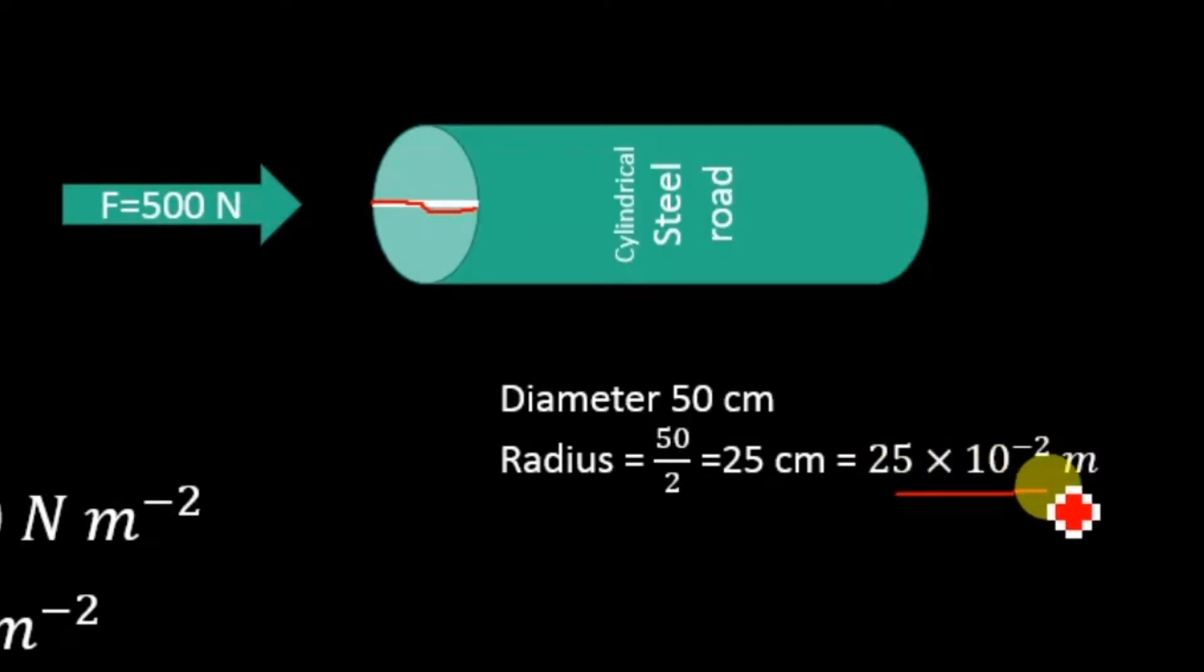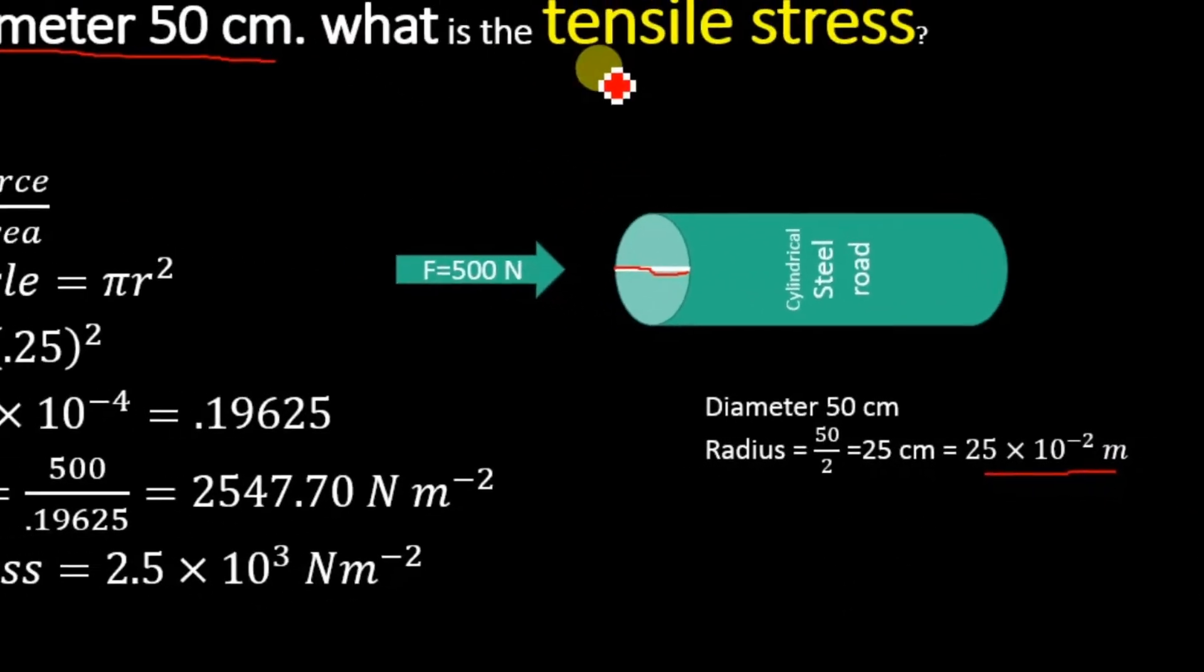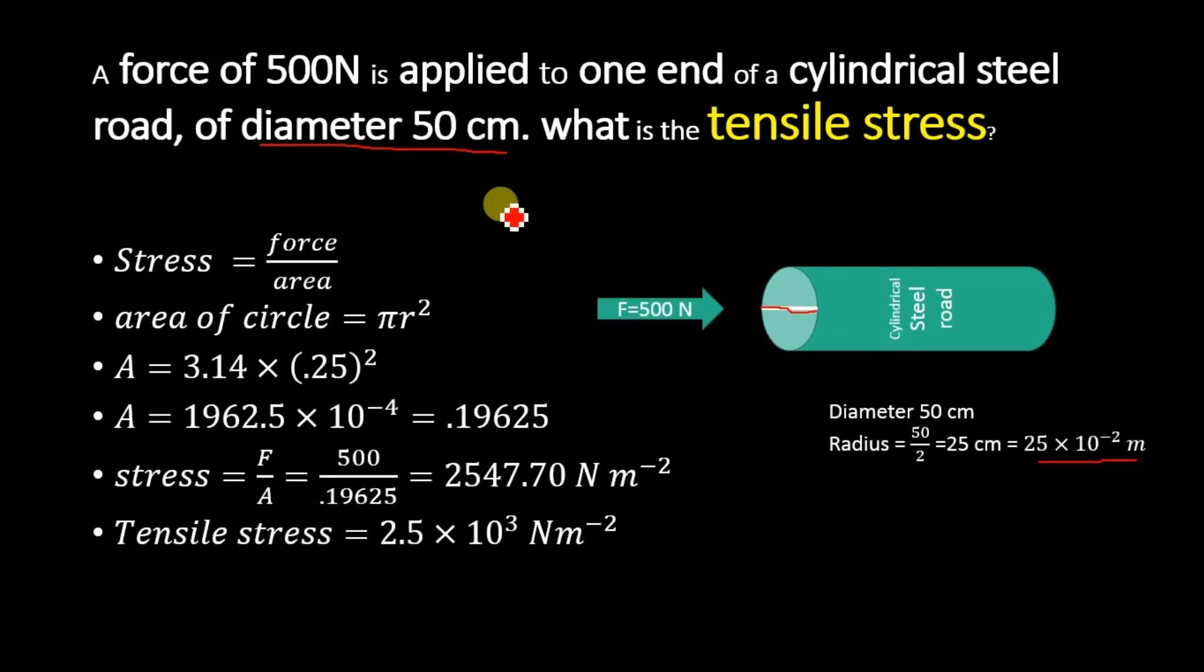So what is the tensile stress? We are going to determine the value of stress. We know that stress is equal to force divided by area. Now we know the value of force which is 500, and we will determine the area of this circular area where the force is applying. We know the area of a circle is equal to πr².